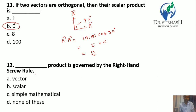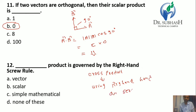Question 12: Which product is governed by the right-hand screw rule? In the cross product, we find the resultant vector direction using the right-hand rule or screw rule. So the answer is A: vector product.